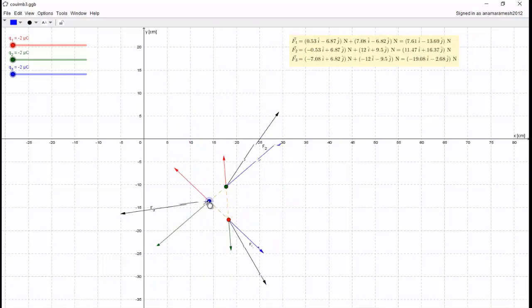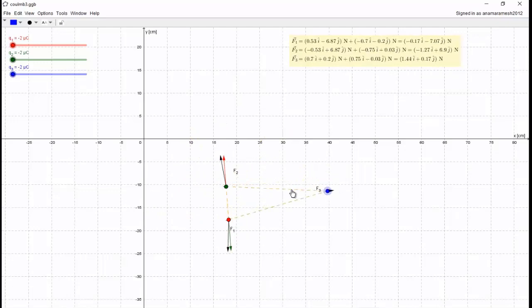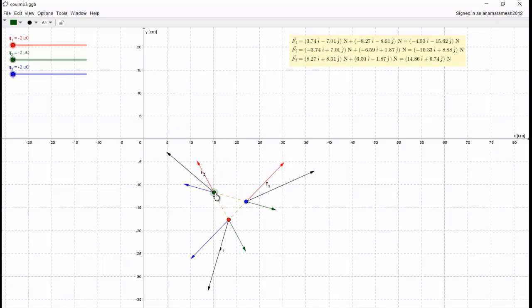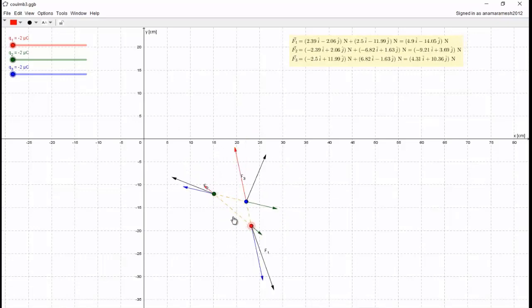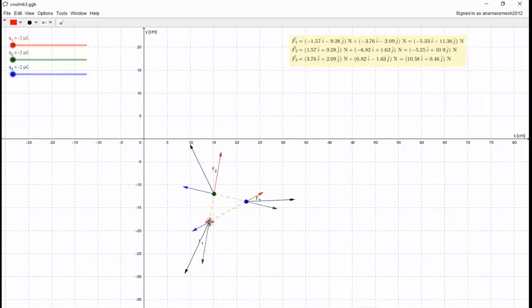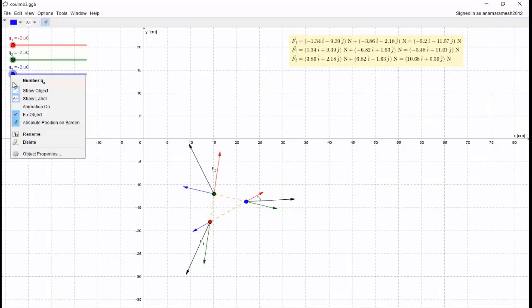The resultant can be calculated by the law of parallelogram, which says that charges at one corner will repel one another for like charges. It will be the same for other charges as well.